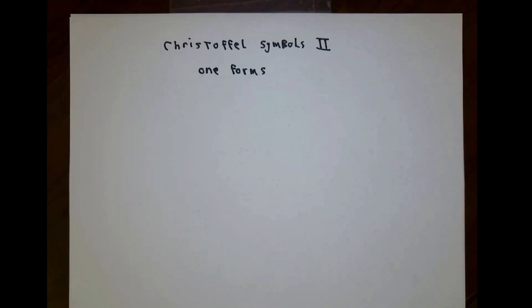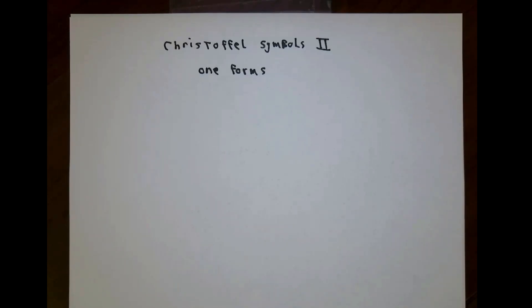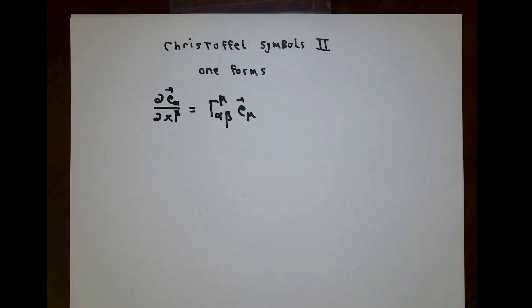Good morning. Today I'd like to talk some more about Christoffel symbols. In particular, I want to think about one-forms and their covariant derivatives. The way we figured out things previously was by looking at vectors not only in terms of their components, but in terms of their components and the corresponding basis vectors. We did some calculations and made up an abbreviation for some coefficients, which we called the Christoffel symbols. However, we know very little about those Γ^μ_{αβ} quantities, except in the special case of polar coordinates, where we used our knowledge of basis vectors and components to figure them out.